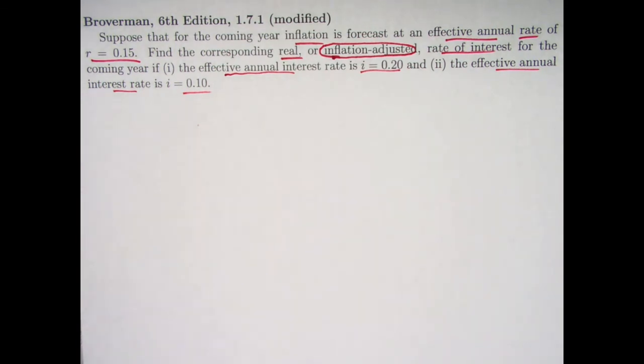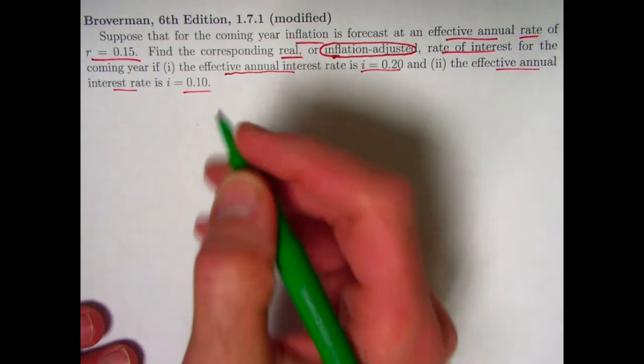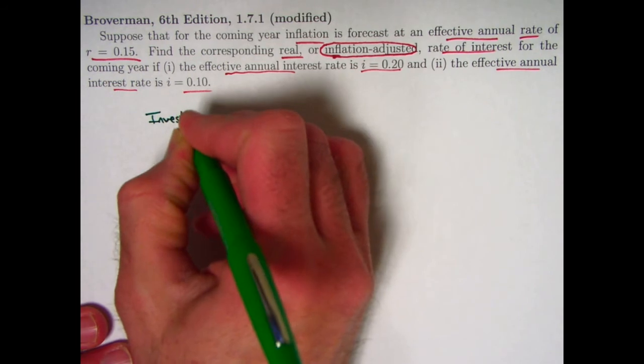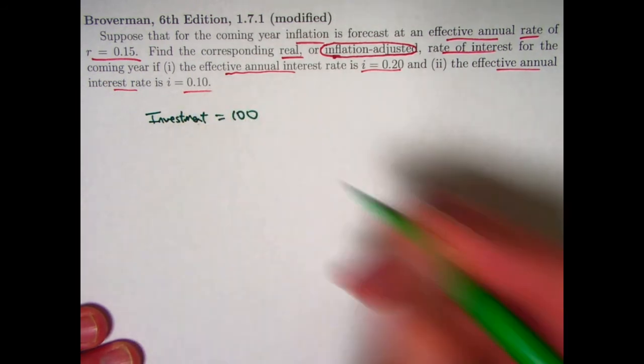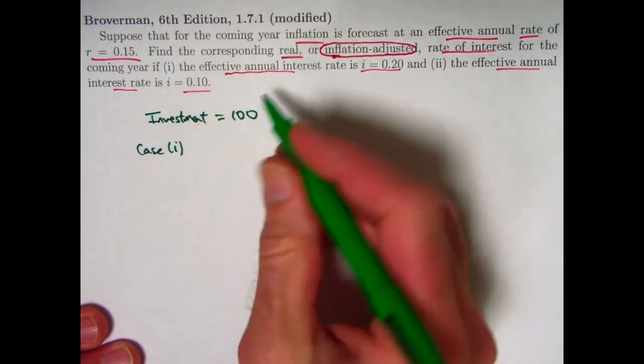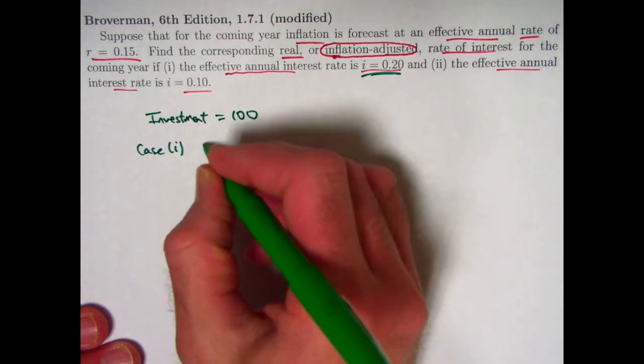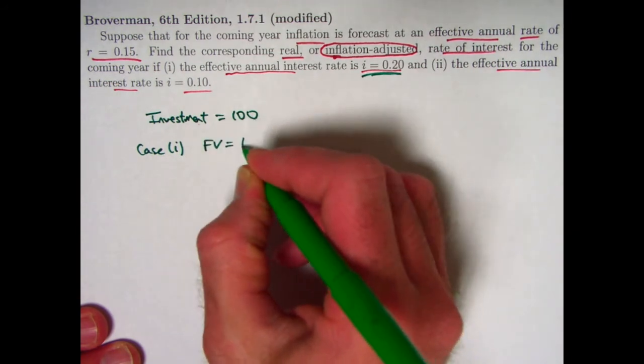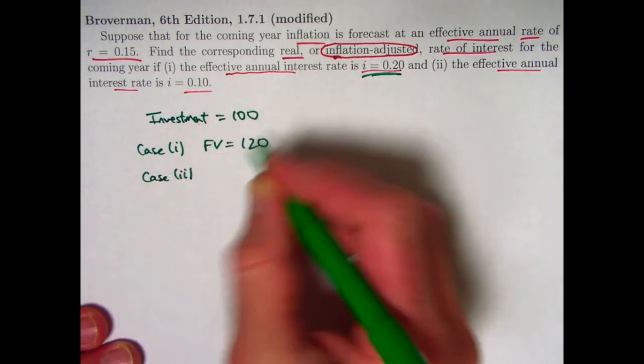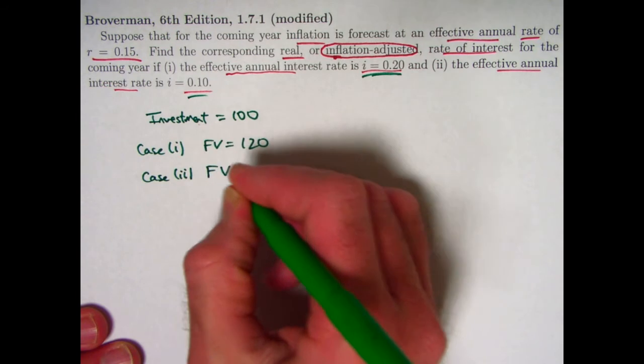All right, now there's a formula for the real rate of interest or real rate of return, but I would encourage you to think about this kind of problem without bothering to memorize the formula. You can think of it in terms of you've got a certain investment amount at the beginning of the year. Let's say 100 to keep it simple. And in case one, you're gonna grow by 20 percent, so the future value of that is going to be 120. And in case two, it grows by 10 percent, so the future value is going to be 110.